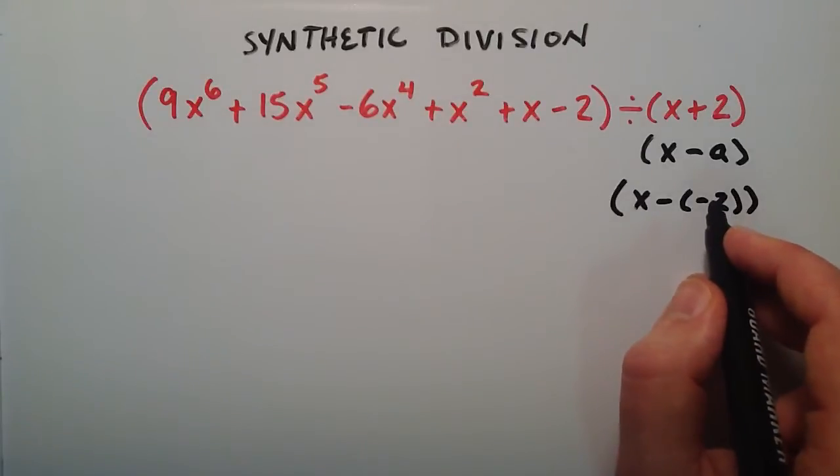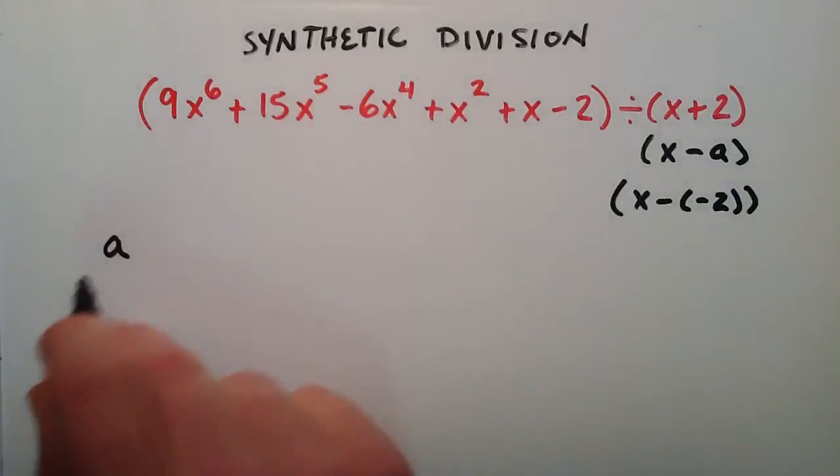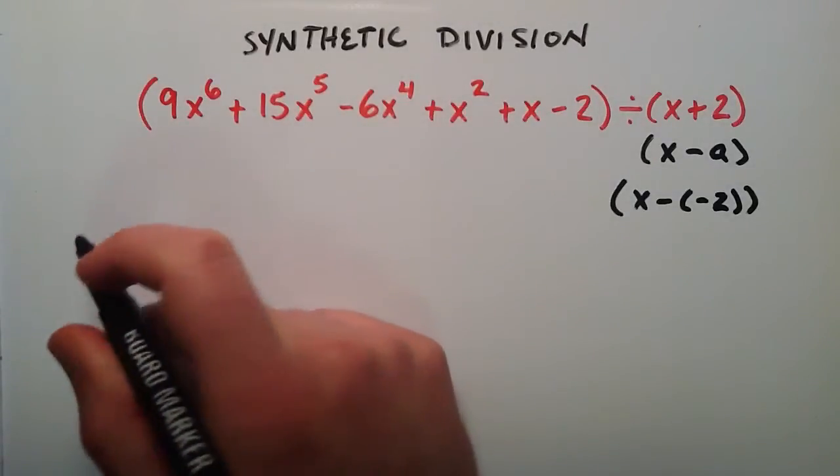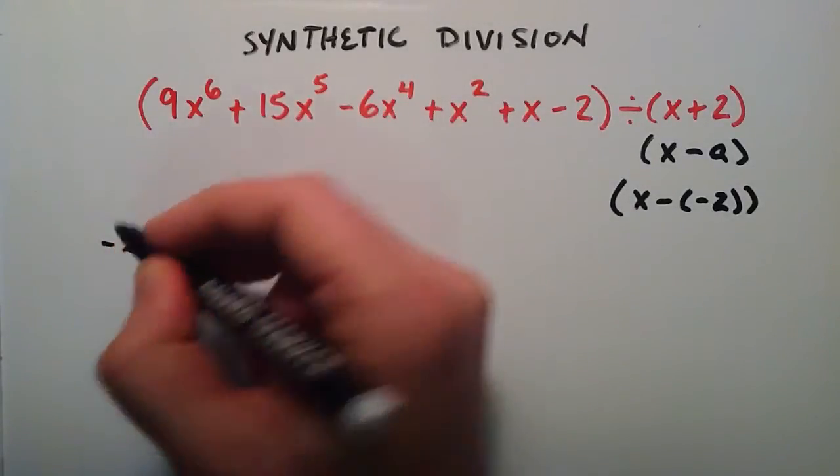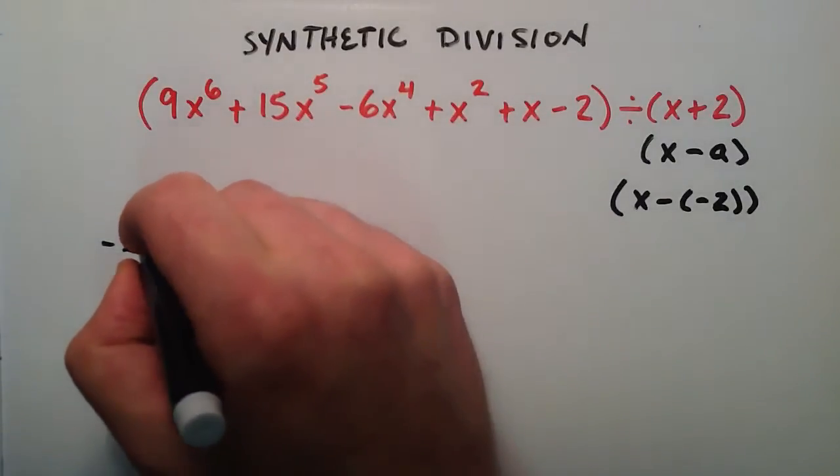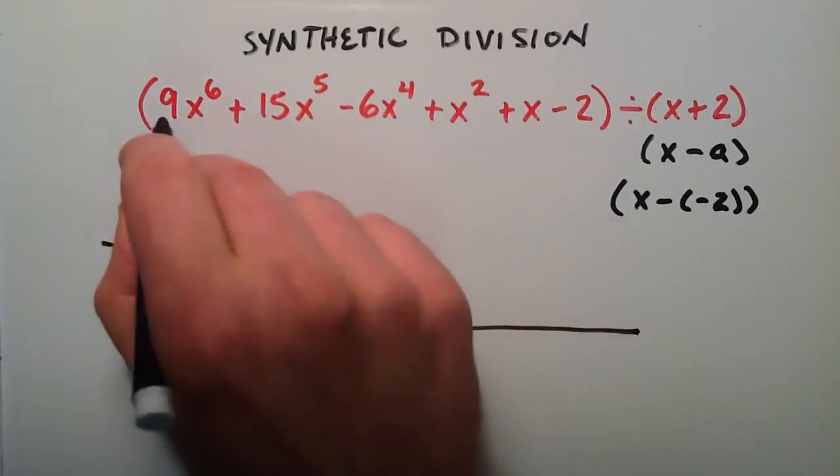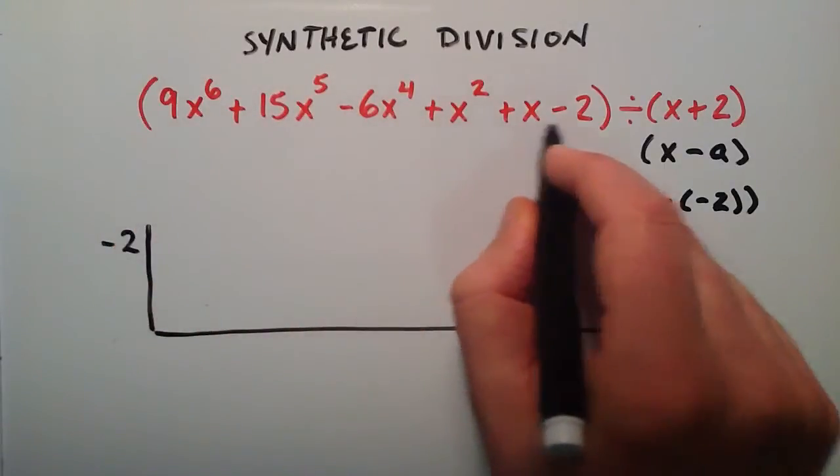So now that we've determined our a, we're just going to simply write it over here. We're not going to write a, we're going to write negative 2. So we're going to write our negative 2 down there which is our a. And then we're just going to draw this little box thing again like we did in the last tutorial. And then we're just going to pull off the coefficients here.